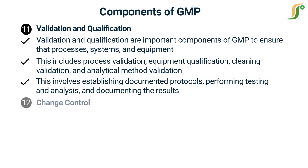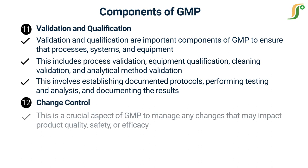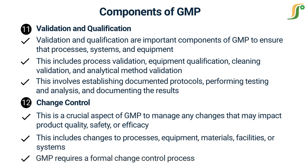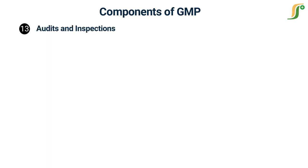The twelfth component is Change Control. Change control is a crucial aspect of GMP to manage any changes that may impact product quality, safety, or efficacy. This includes changes to processes, equipment, materials, facilities, or systems. GMP requires a formal change control process that involves assessing the impact of the proposed change, documenting the change, obtaining appropriate approvals, implementing the change, and evaluating its effectiveness.